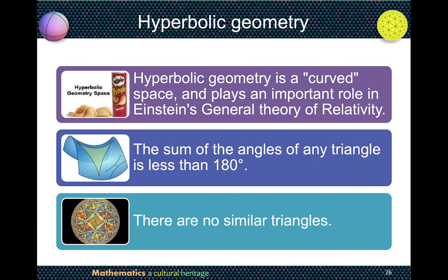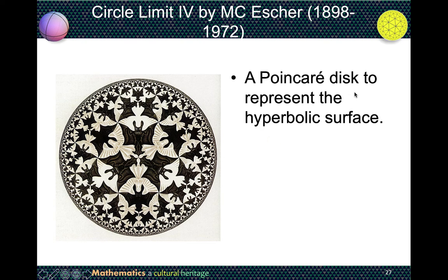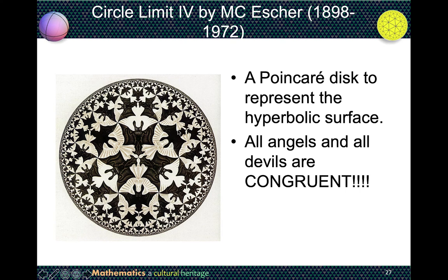We can imagine that hyperbolic geometry is a curved space, and it plays an important role in Einstein's general relativity. The angle sum of triangles is always less than 180 degrees, and there are no similar triangles. The artist M.C. Escher drew a painting series called the Circle Limit using the Poincaré disk to represent the hyperbolic surface. In this picture, all the devils and angels are congruent — if you hold a ruler and walk toward the boundary, the ruler diminishes with you, so every figure measures the same size. There are no similar triangles or similar shapes in hyperbolic geometry.